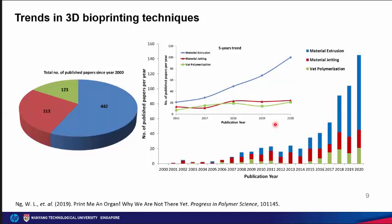Material jetting is more attractive for fabrication of smaller tissues and organs, enabling drop-on-demand printing of different cell types and biomaterials on the same planar surface to improve cell-cell and cell-matrix interaction. Vat polymerization offers high printing resolution, a wide range of printable viscosity, and high printable cell density. New photo-initiators facilitate cross-linking in the visible light region, inducing less DNA damage. Each bioprinting technique has unique advantages and limitations, so the choice is highly dependent on the desired application.